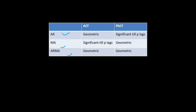For example, in an AR process, the ACF function follows a geometric decay, and the PACF function is significant only till P lags. In the MA process, the ACF function is significant till P lags, whereas the PACF follows a geometric decay for the MA process. So it is just opposite of AR — ACF and PACF behave totally opposite compared to what you see for an AR process.